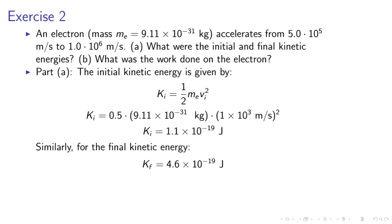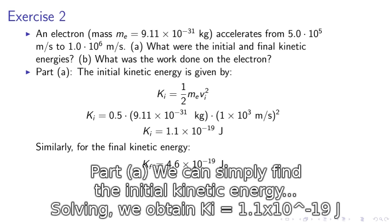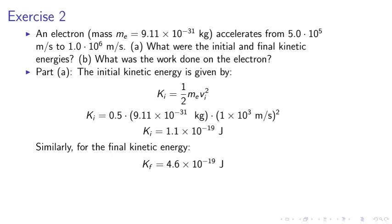Part A. We can simply find the initial kinetic energy from Ki equals half Me vi squared. For solving, we obtained the initial kinetic energy is equal to 1.1 times 10^-19 joules. For the final kinetic energy, we obtain 4.6 times 10^-19 joules.